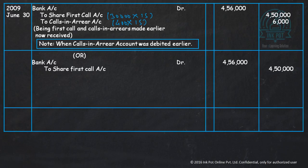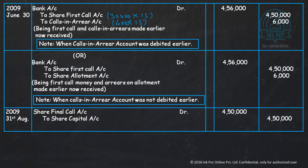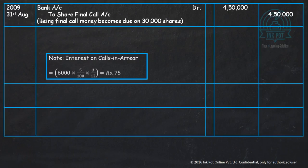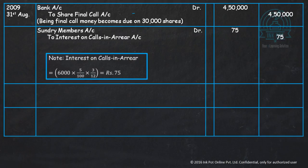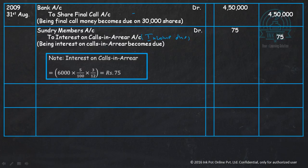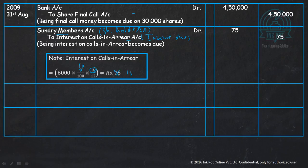After that, share final call is being due. Then we calculate interest on calls in arrears: sundry members account debit to interest on calls in arrears — since it is an income it is credited. Sundry members refers to the shareholders from whom we have to receive interest. Since allotment was paid three months late, interest is calculated for three months at 10% per annum: Rs. 6,000 × 10% × 3/12 = Rs. 150.